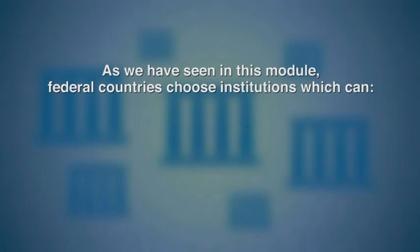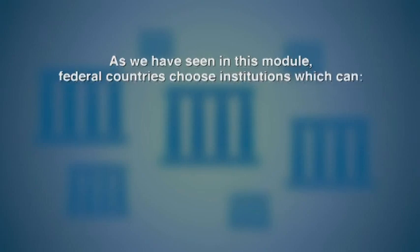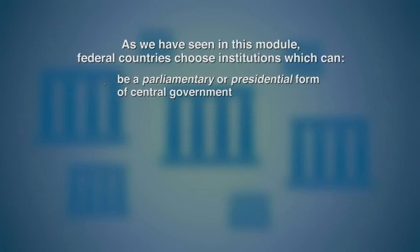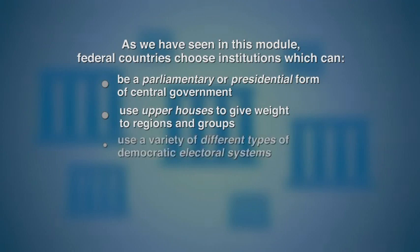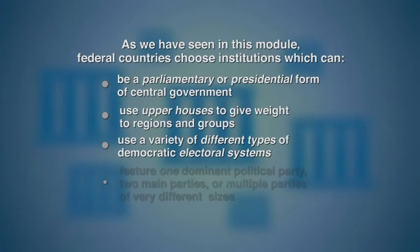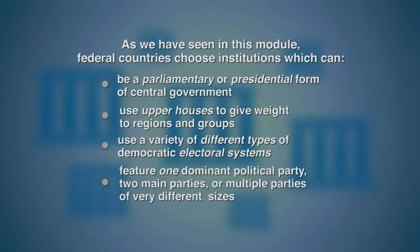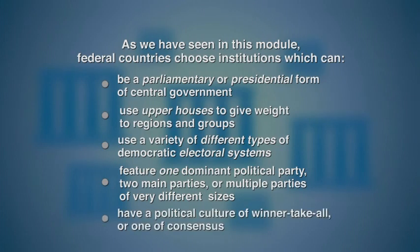As we've seen in this module, federal countries choose institutions which can be parliamentary or presidential, use upper houses to give weight to regions and groups, use a variety of democratic electoral systems, feature one dominant political party or two main parties or multiple parties of different sizes, and have a political culture of either winner-take-all or one of consensus.